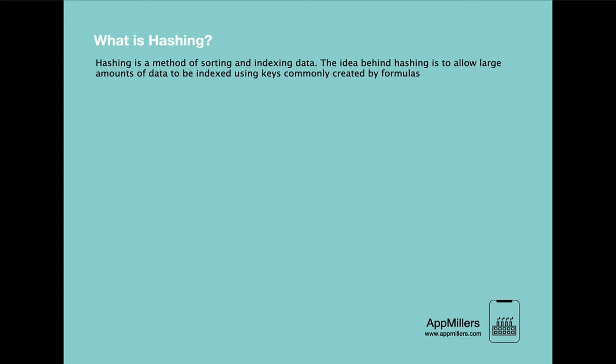Let's clarify this definition with a real example. Let's assume we have three strings and we want to store them in an efficient way: the strings apple, application, and app millers. If we want to store them using hashing, the first step is to convert these strings into numbers using some magic function.